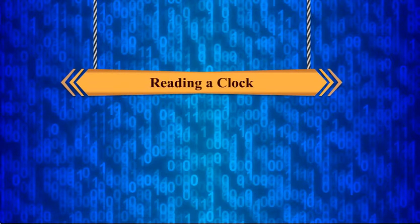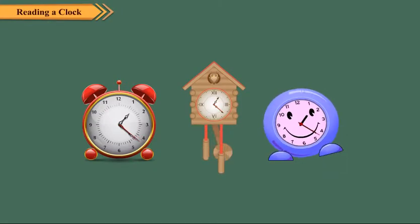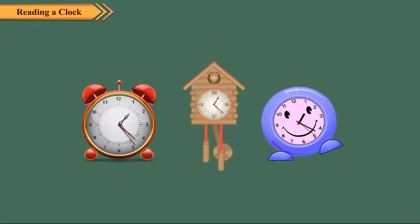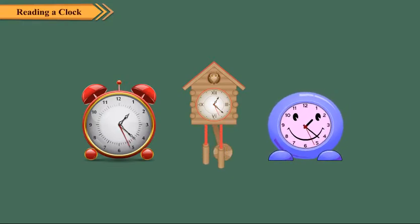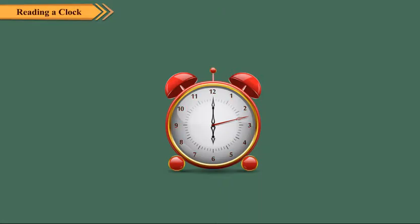Reading a Clock. Did you ever observe a clock carefully? Look at these clocks. A clock tells us time in hours and minutes. The face of the clock is called its dial. On its dial, numbers from 1 to 12 are marked at equal intervals.